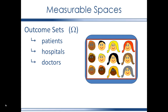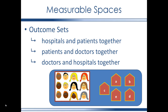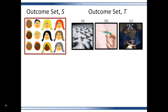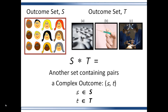We can accommodate that. You might choose an outcome set that consists of hospitals and patients together, patients and doctors together, or doctors and hospitals together. You could also have an outcome set consisting of individuals assigned to a specific treatment. A complex outcome set could involve collecting five people, which is a data generating process. If you randomly select a person from outcome set S and then randomly assign them to a treatment A, B, or C from outcome set T, your outcome is an individual and a treatment — a pair of items. This pair is an element in the complex outcome set and is a complex outcome.